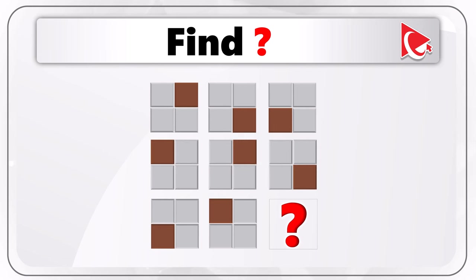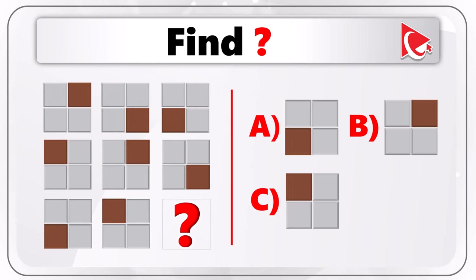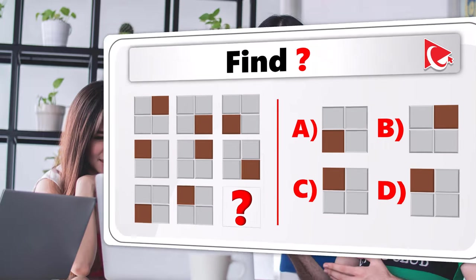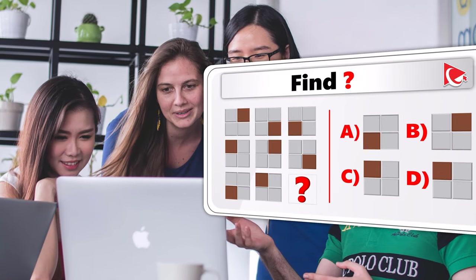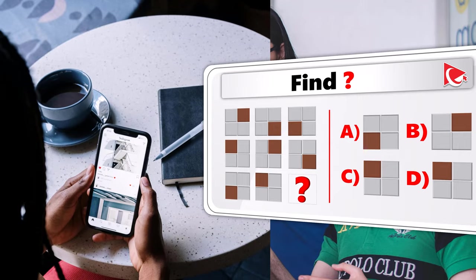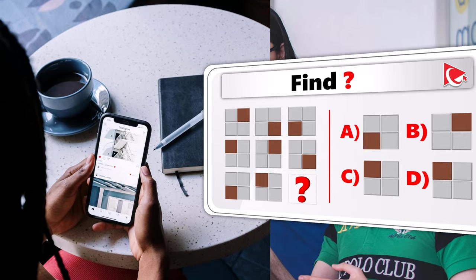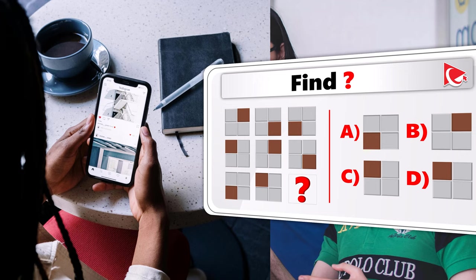There are 8 squares presented and the 9th square is missing. Determine and select the missing square out of choices A, B, C, and D. Take a shot at this independently, share your answer in comments — I'm excited to see your response. Thanks for participating, and may the odds be in your favor!